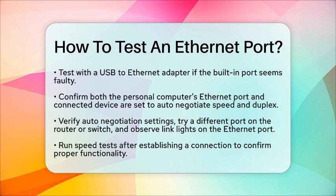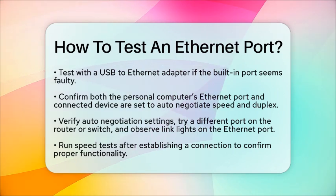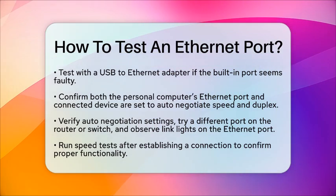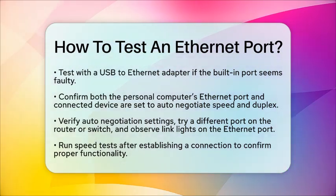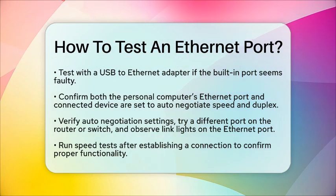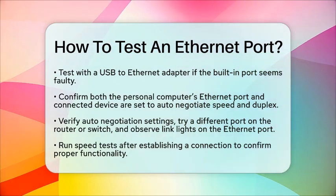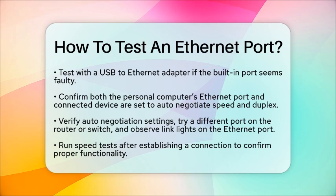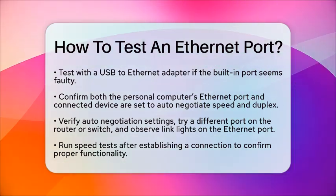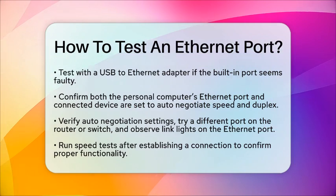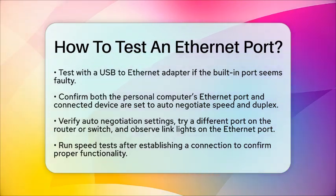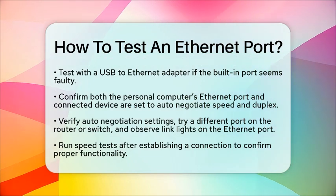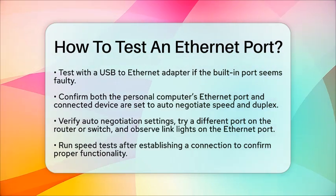When dealing with Ethernet speed negotiation failure, it is essential to confirm that both your personal computer's Ethernet port and the connected device are set to auto-negotiate speed and duplex. If one side is set to a fixed speed while the other is on auto, it can lead to connection failures. Testing the port involves verifying the auto-negotiation settings on both ends, trying a different port on the router or switch, and observing link lights on the Ethernet port to confirm a physical connection.